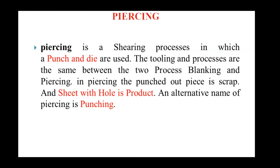Another name for this process is punching. So in a punching operation, punch and die are used. The sheet metal is kept on the die, the punch comes and pierces inside the sheet metal. The removed piece is thrown out as scrap and is not useful. The product is the sheet metal with the hole. This process is called the piercing or punching process.